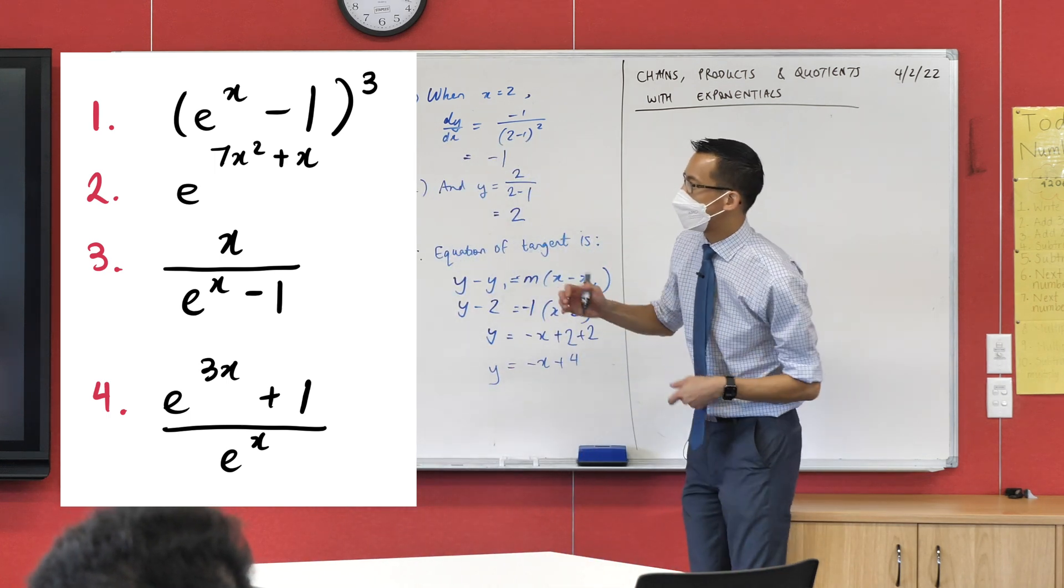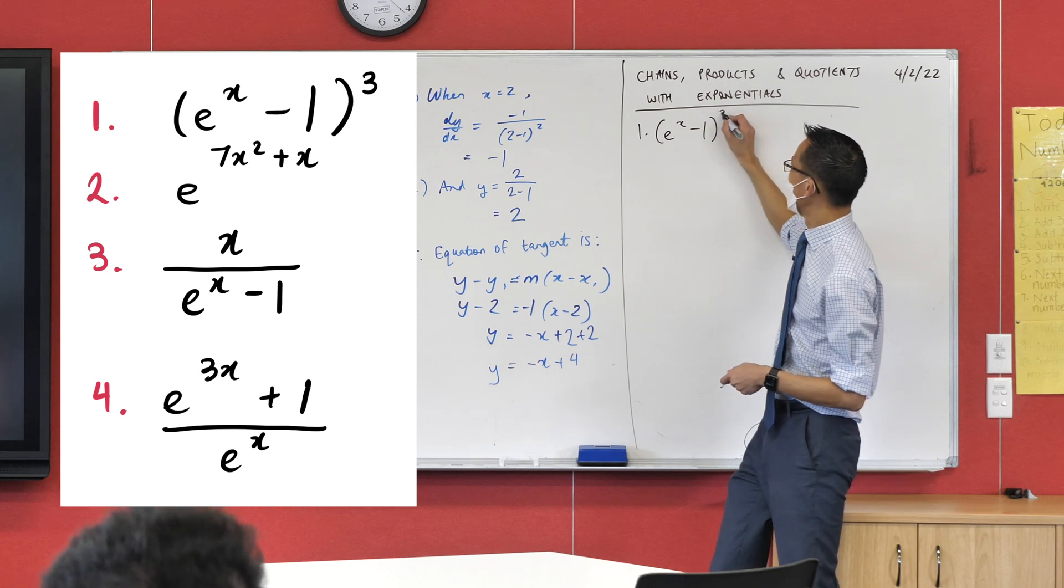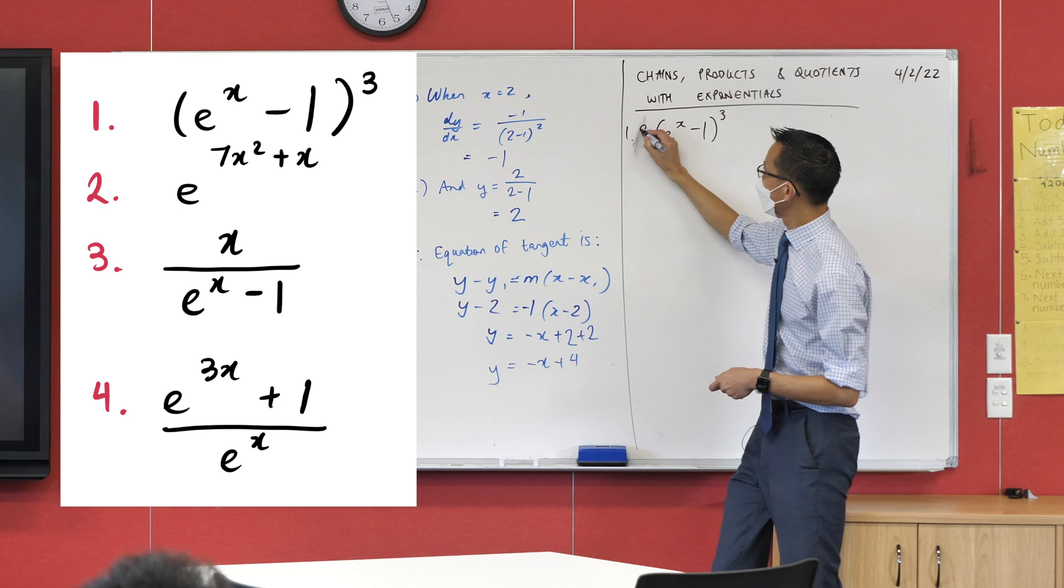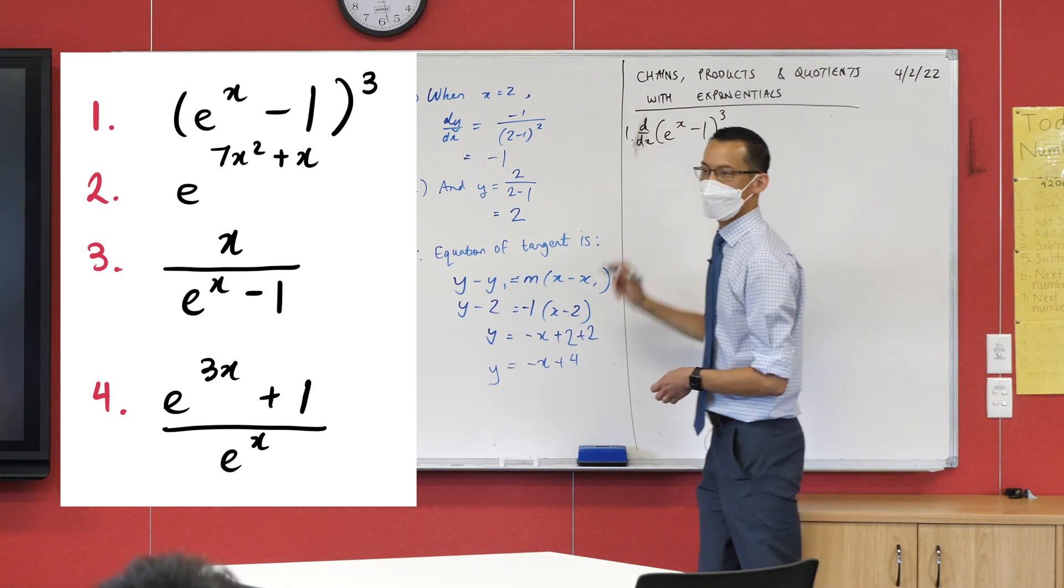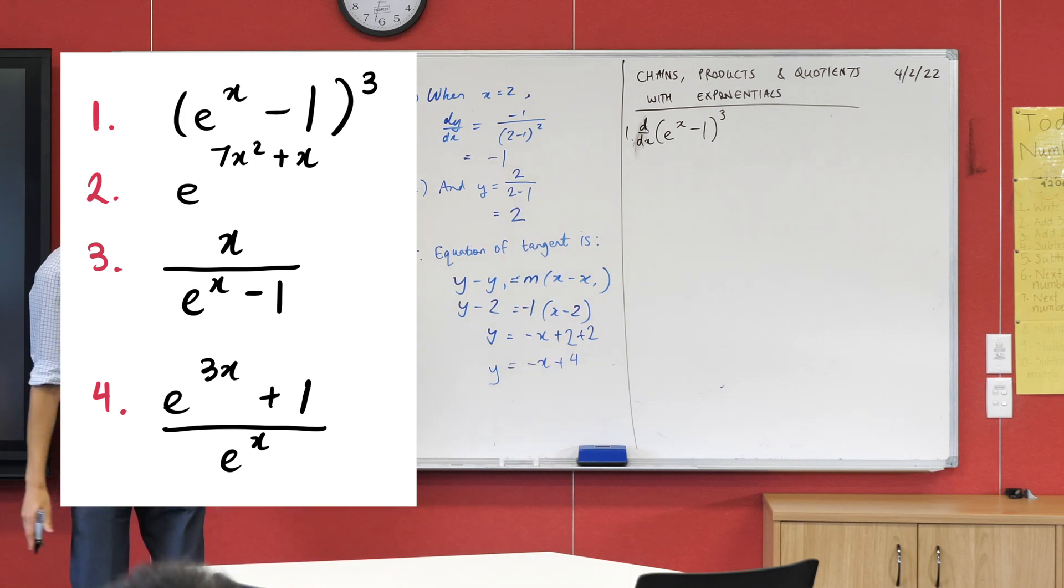So the first one you can see there says e to the (x minus 1) all cubed. What we're going to do is differentiate this, so I'm going to put d/dx out the front. And what that indicates is whatever you're about to see, we're going to differentiate it—we're going to find its derivative.